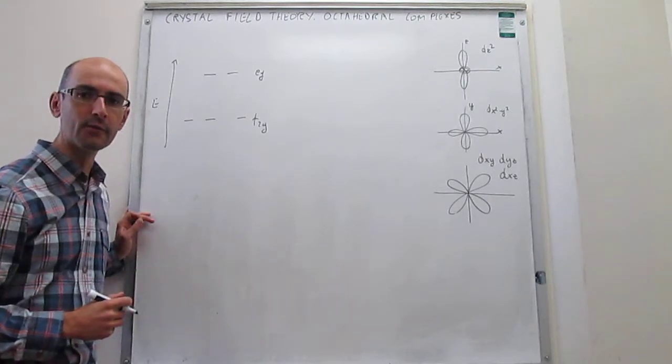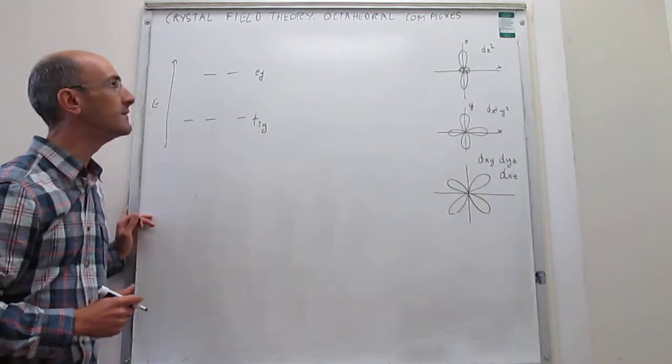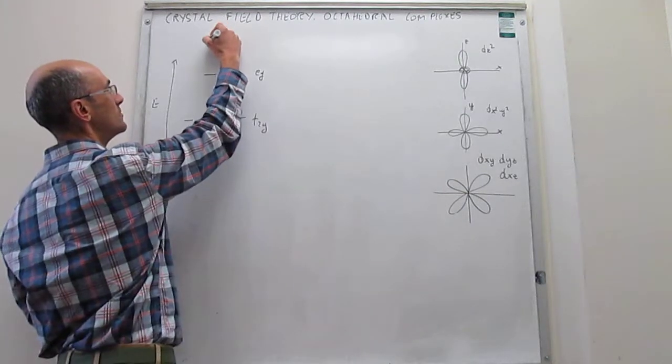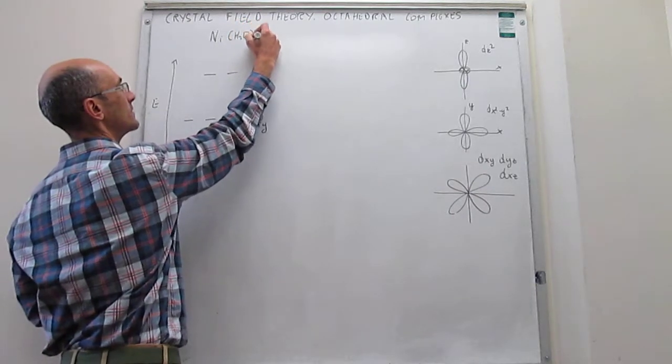Using this crystal field theory for octahedral complexes, now we're going to try to understand the variation in color in two very similar transition metal complexes.